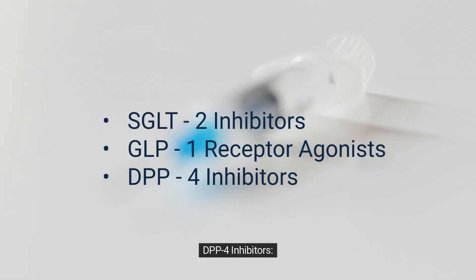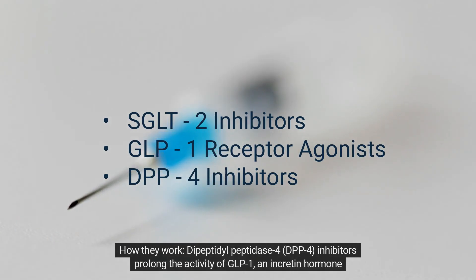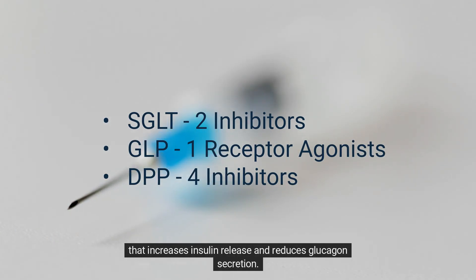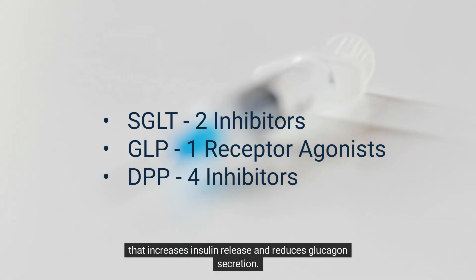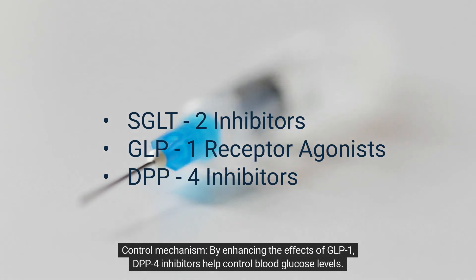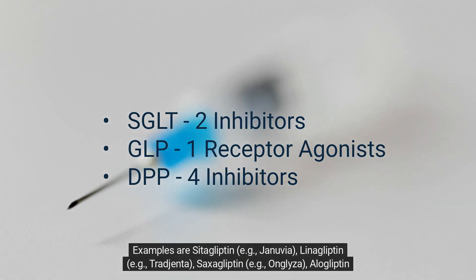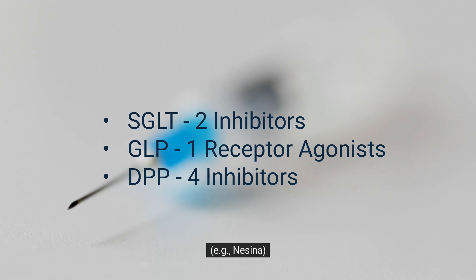DPP-4 inhibitors: Dipeptidyl peptidase 4 (DPP-4) inhibitors prolong the activity of GLP-1, an incretin hormone that increases insulin release and reduces glucagon secretion. By enhancing the effects of GLP-1, DPP-4 inhibitors help control blood glucose levels. Examples are sitagliptin (Januvia), linagliptin (Tradjenta), saxagliptin (Onglyza), and alogliptin (Nesina).